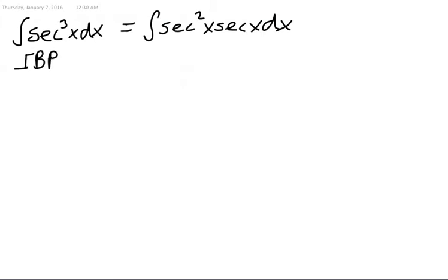So IBP, remember IBP says the integral of u dv is equal to u times v minus the integral of v du, which means we have to assign a u and a dv.